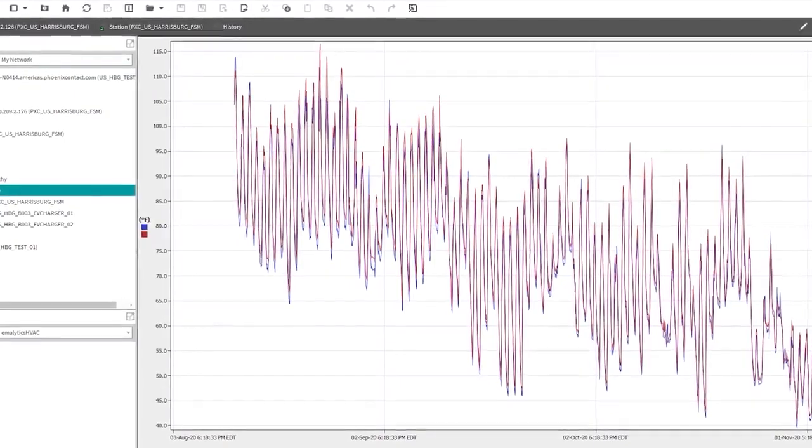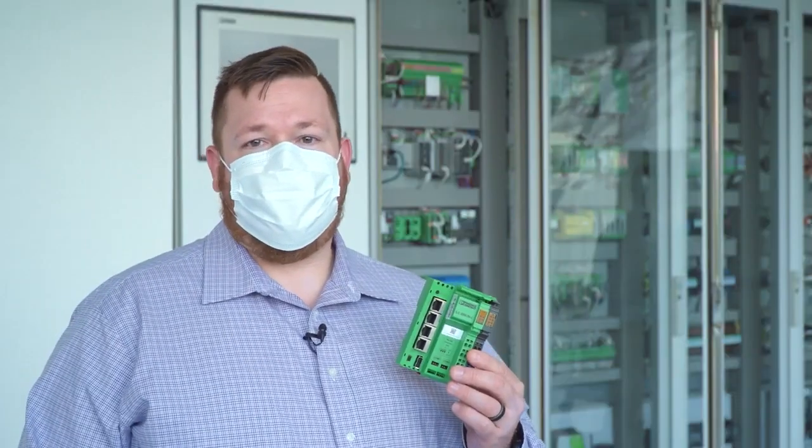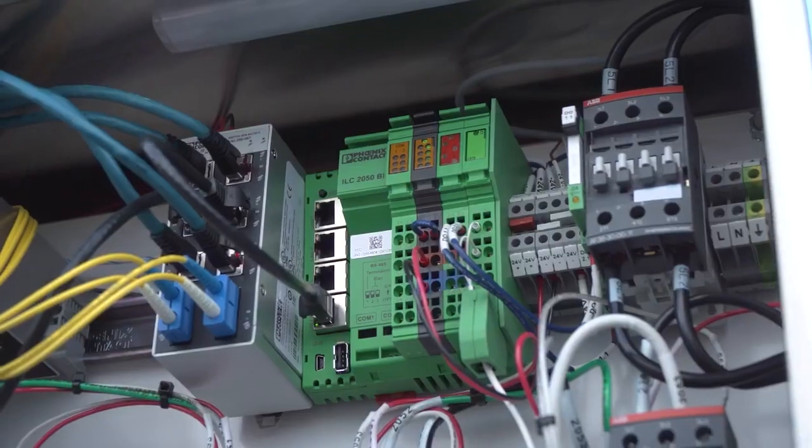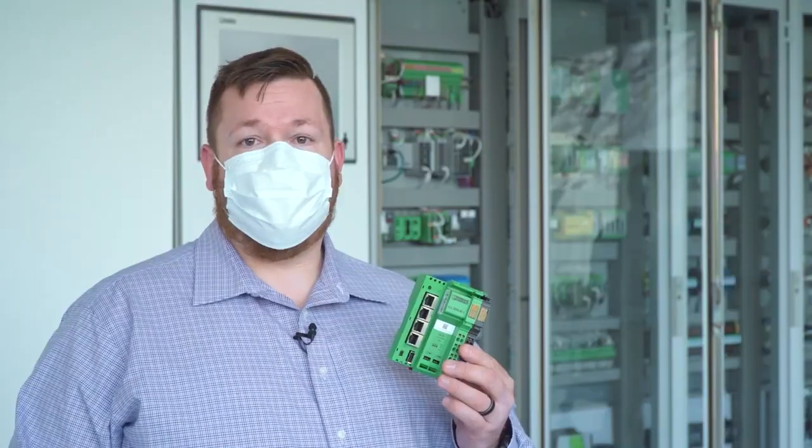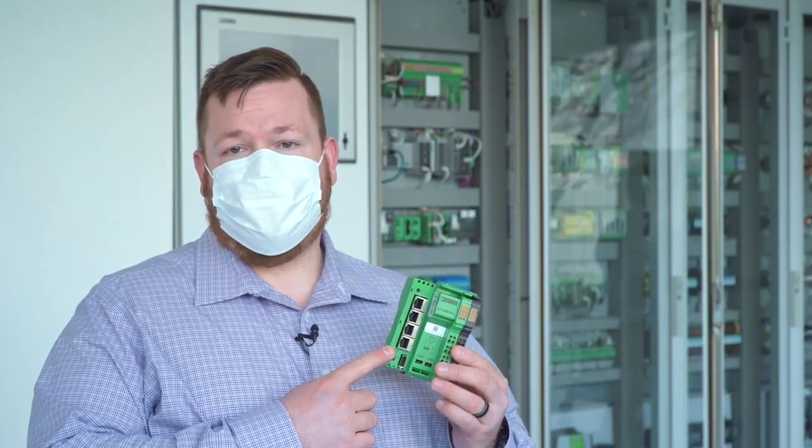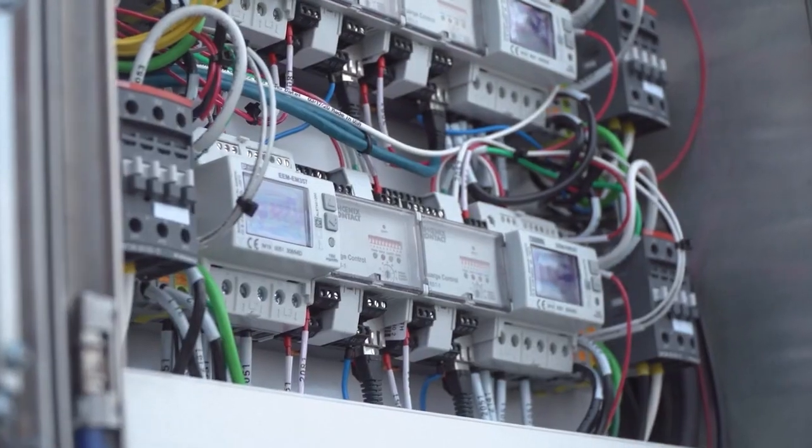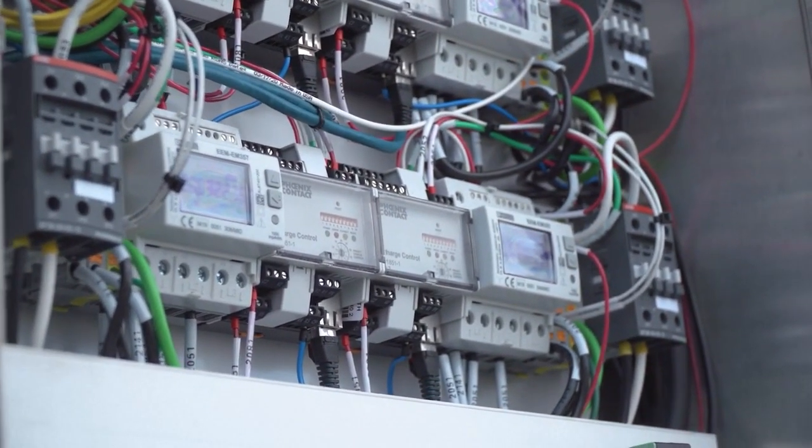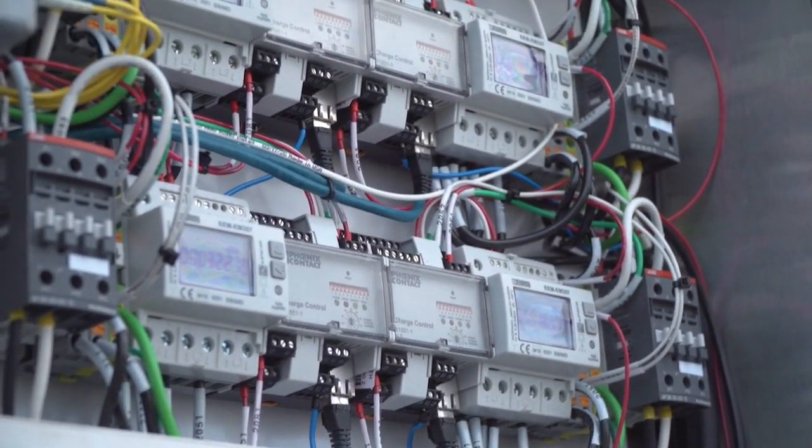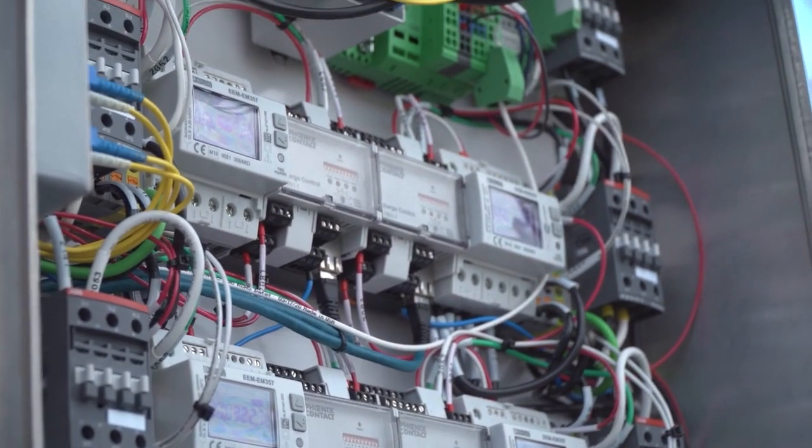When we upgraded the EV charging stations, the first thing we did was to replace the controllers with the new ILC 2050 running the Niagara framework. Secondly, we reworked the cabinet to add four additional power meters, the EM357, in order to monitor each power cable itself.